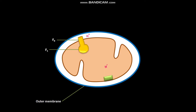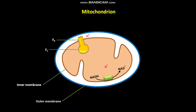Now let us discuss chemiosmosis in the mitochondrion. In this case, the inner membrane has enzymes that oxidize NADH to NAD+. These enzymes also transfer electrons to the electron acceptor O2. After accepting the electrons, the O2 reacts with other reactants to form H2O.